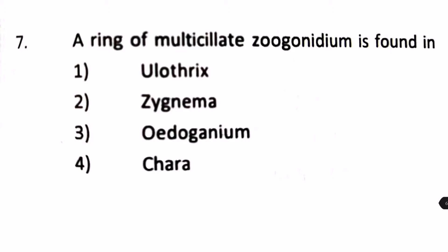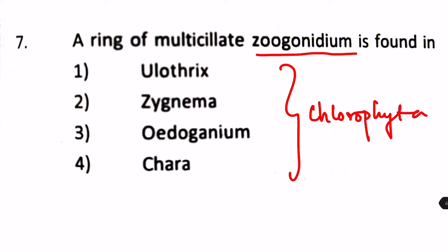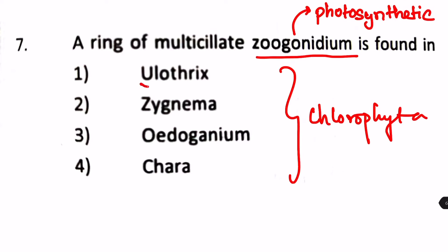A ring of multiciliate zoospores is found in which organism? Options are Ulothrix, Zygnema, Oedogonium, and Chara. These all are from the Chlorophyta group. A zoospore is a group of spores which all together form a motile structure. It is found in Ulothrix. So the answer is A. Oedogonium may also be a correct option.